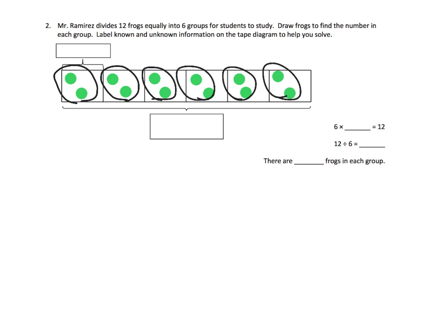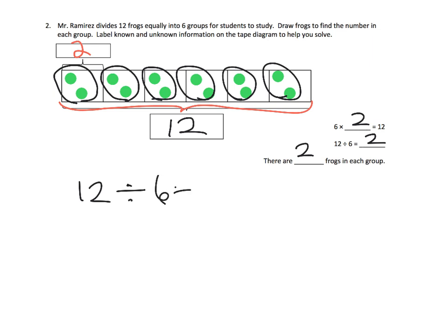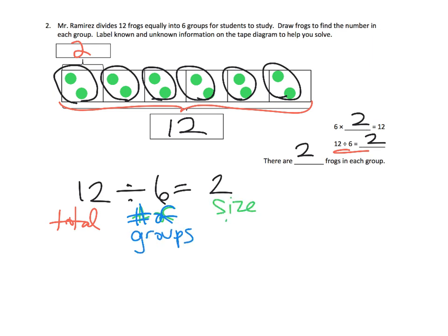Let's fill in the rest of this tape diagram. This is the 12, because that's the total — right here, the total is 12. Each group is going to get 2. So over here, we can write 6 times 2 is equal to 12, and 12 divided by 6 is equal to 2. There are 2 frogs in each group. So 12 divided by 6 is equal to 2. In this case, 12 is the total. This 6 is the number of groups, and the 2 is the size of each group. We've got 12 as the total, there are 6 groups, and each group is 2.